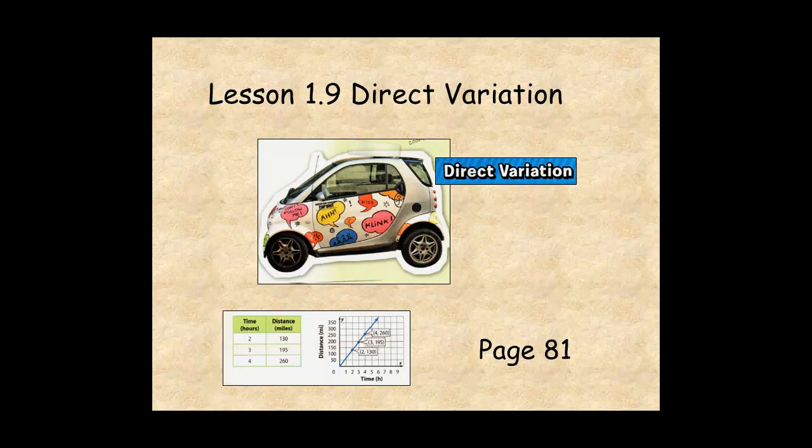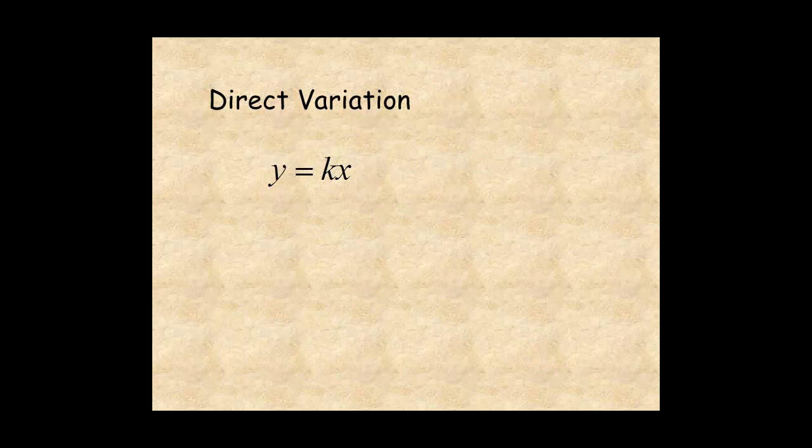This lesson helps you understand direct variation. A relationship between two quantities, x and y, is a direct variation when the relationship is described by the equation y equals kx.